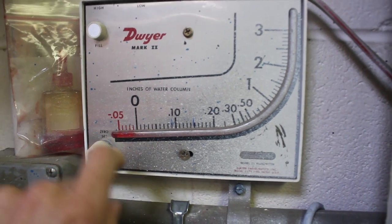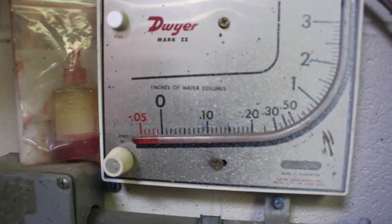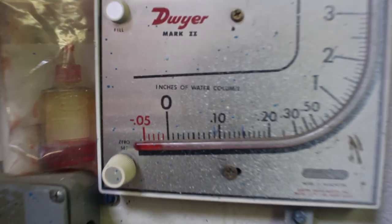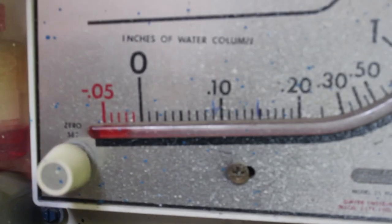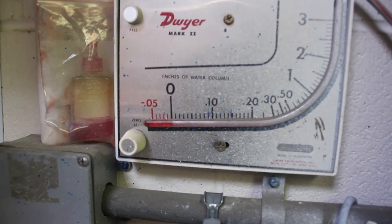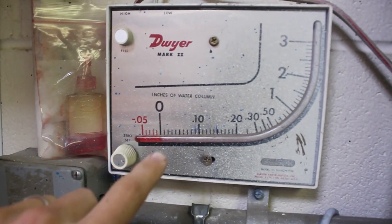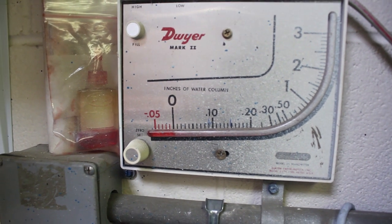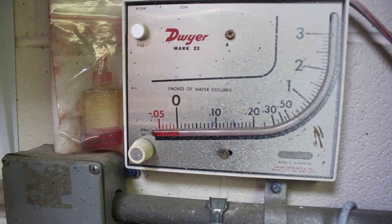The gauge should be set at zero when the booth is off. This is considered calibrated at rest. Once you're at rest and your booth manometer is calibrated at zero, you can go ahead and turn on the booth assuming you have clean filters in the booth.